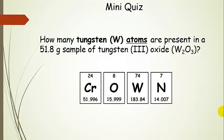Here's a problem for you to try. How many tungsten atoms are present — and notice it says atoms — in a 51.8 gram sample of tungsten 3 oxide, W₂O₃? Pause the presentation and give it a try.